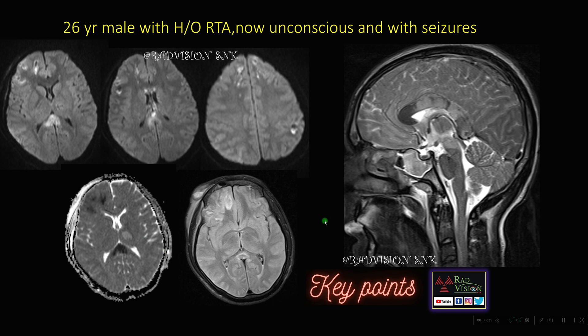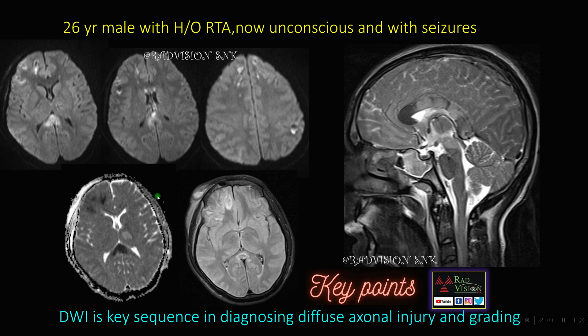If you are suspecting diffuse axonal injury, here also you can see there is typical edema noted in the body and splenium of corpus callosum which is showing restricted diffusion on DWI. Diffusion weighted imaging is a key sequence in diagnosing diffuse axonal injury and grading of DAI.